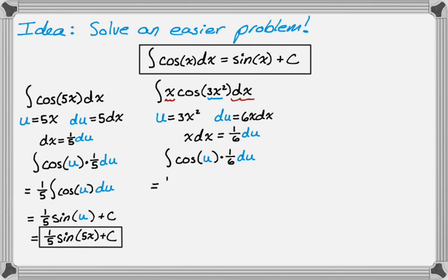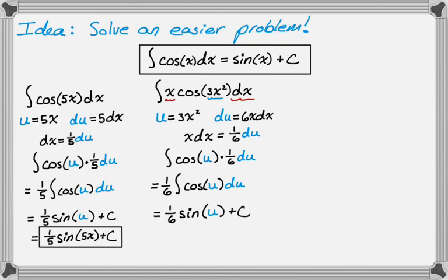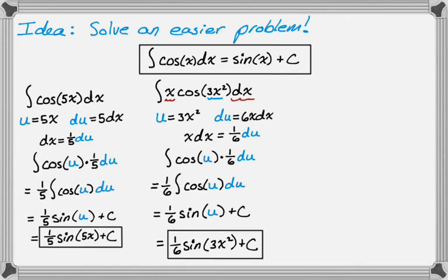Now we can take out the 1/6 to make it look even more similar. The integral becomes the integral of cosine of u, and x dx is being replaced by 1/6 du. Taking out the 1/6, we integrate and get 1/6 sine of u plus c. Then substituting back — since u equals 3x² — we get 1/6 sine of 3x² plus c.